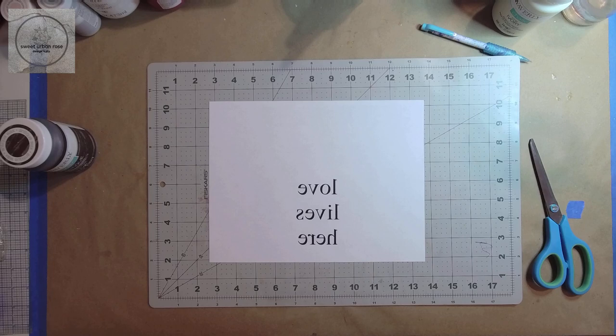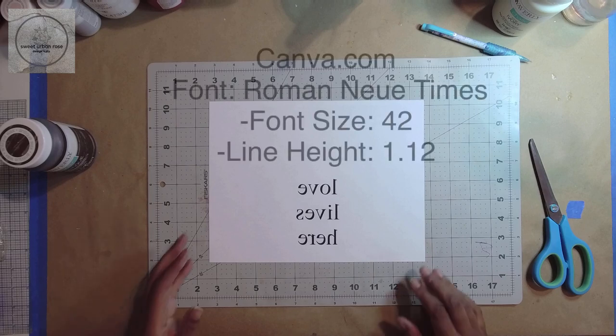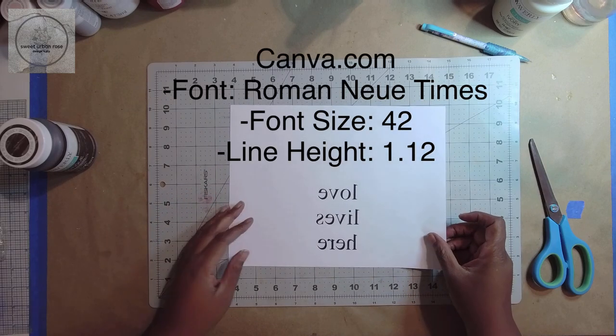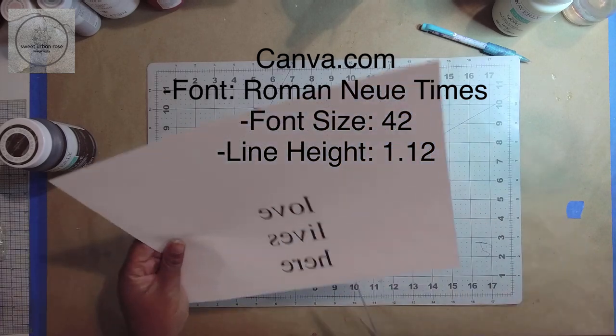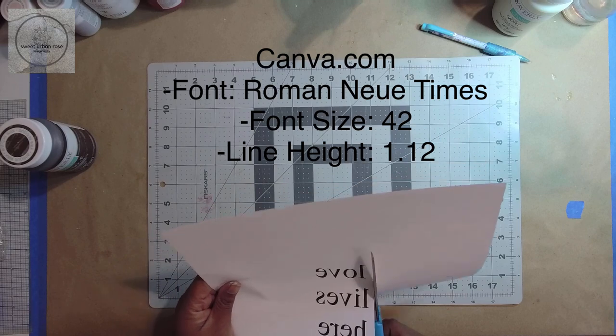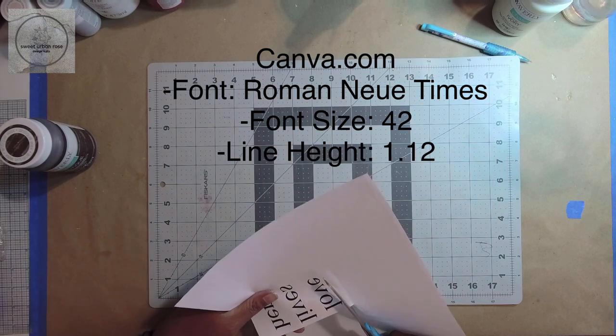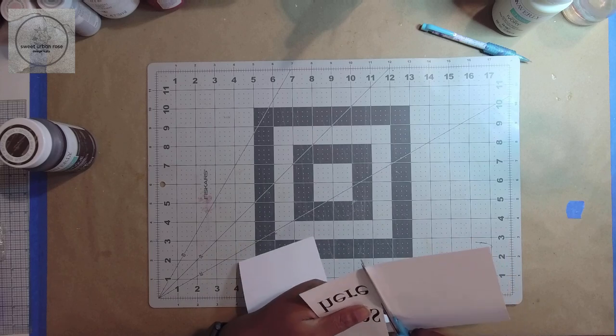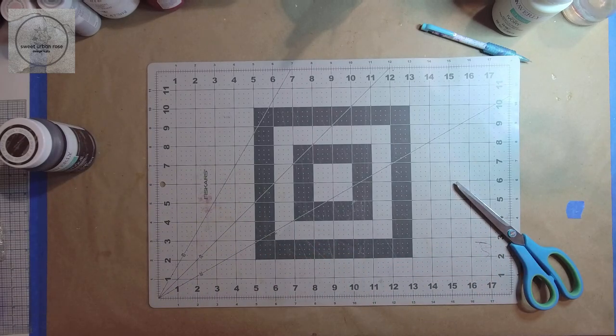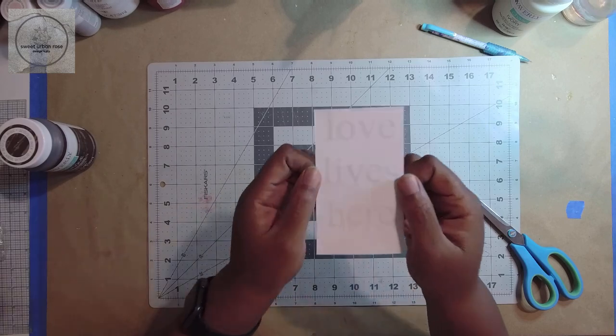Next, I went to Canva.com and chose poster, then typed love lives here. I used Roman New Times font and font size was 42 and adjusted the line height to 1.2. Then I flipped the image before printing it out. The Canva details are also listed in the description box below.